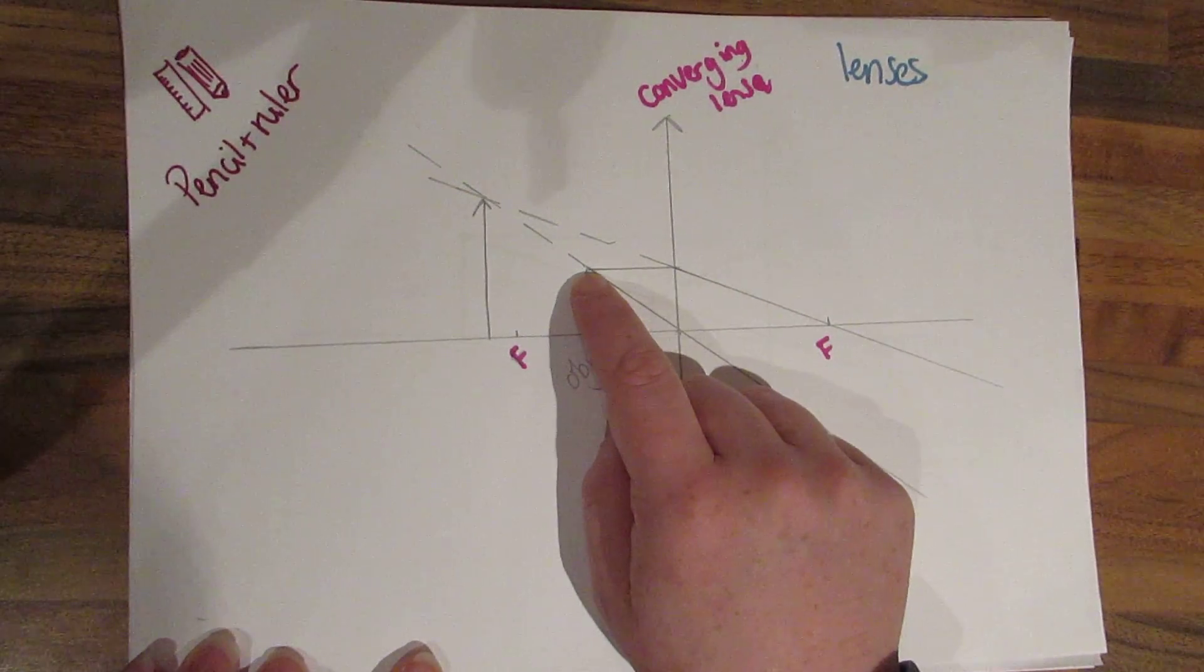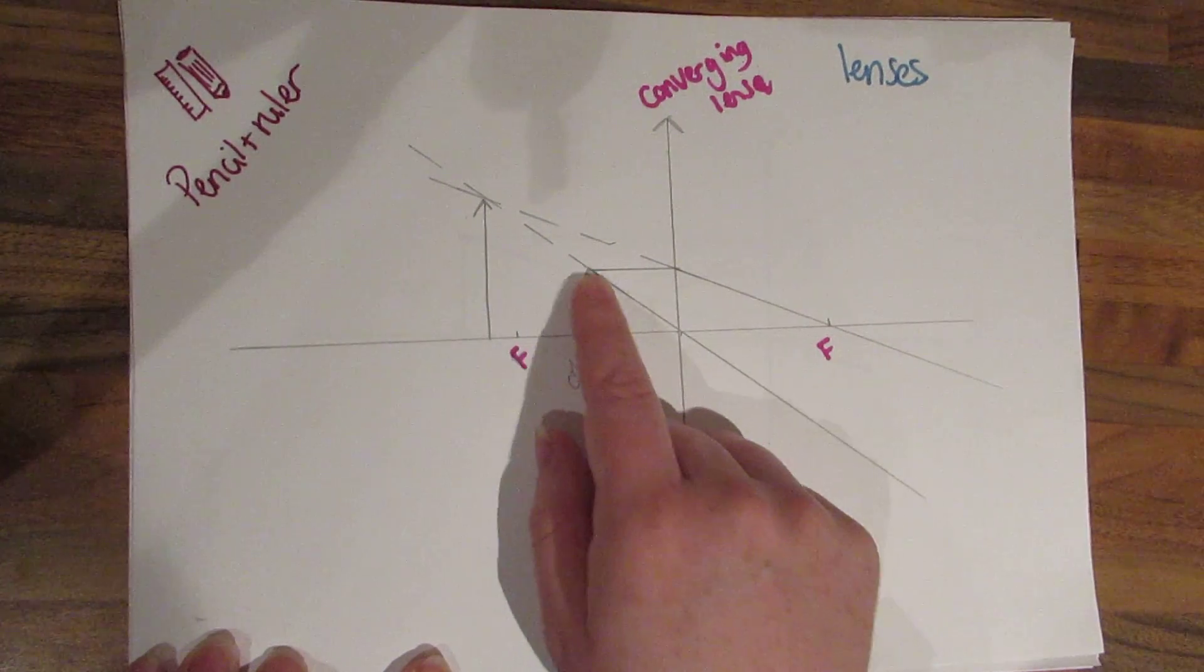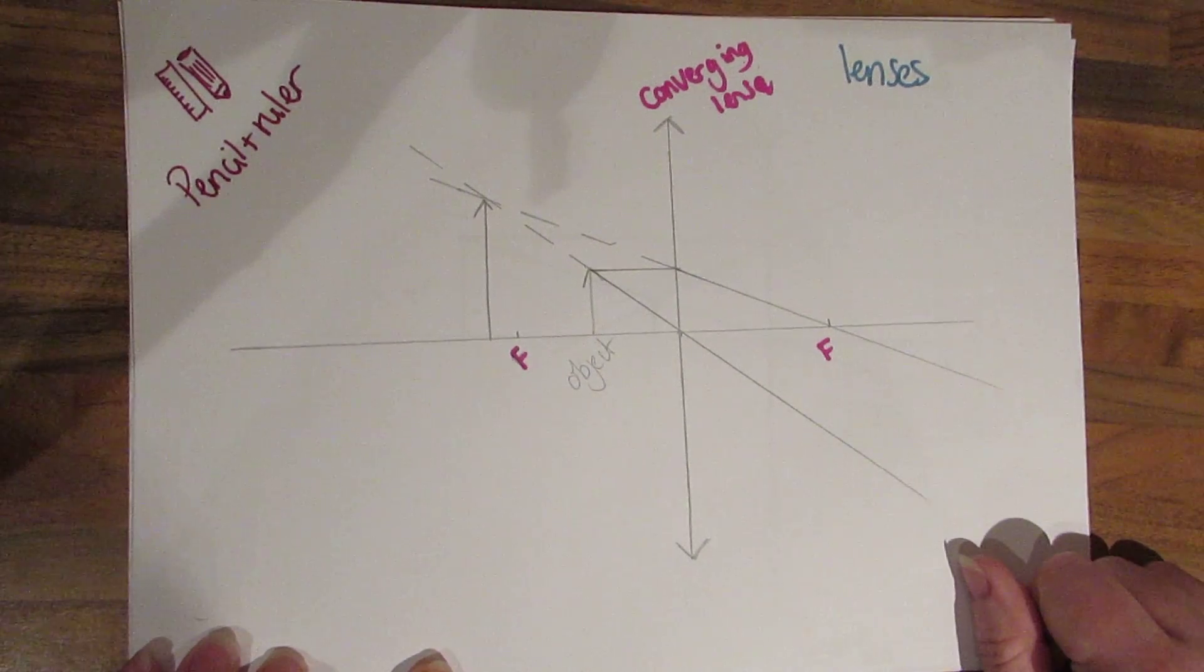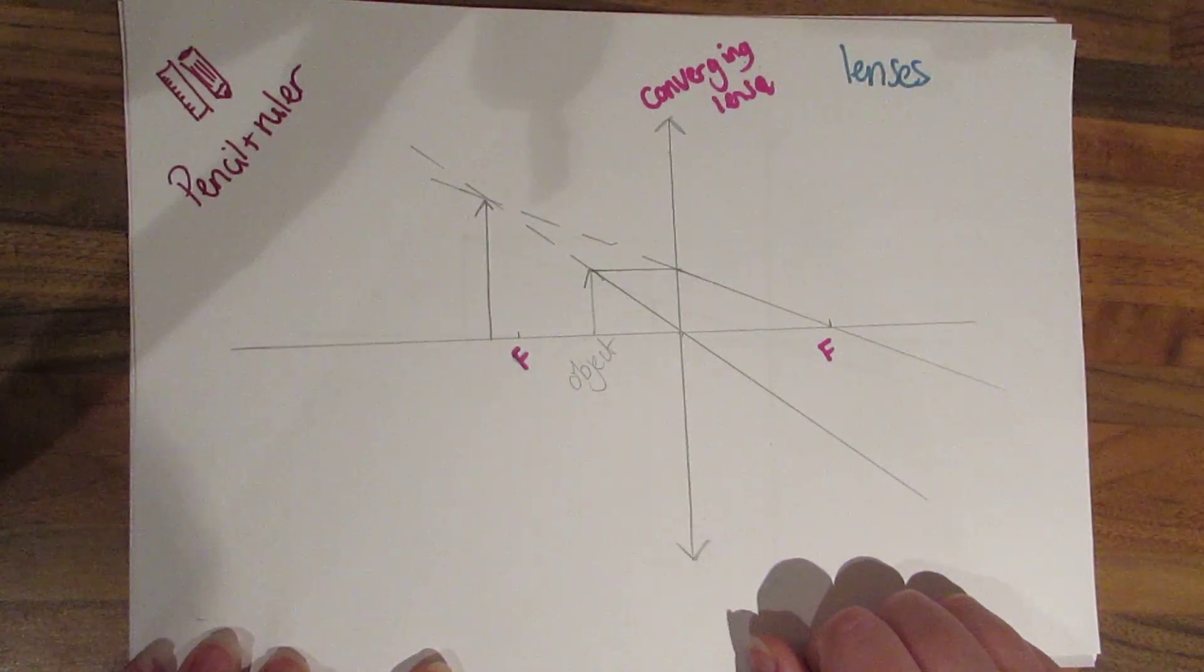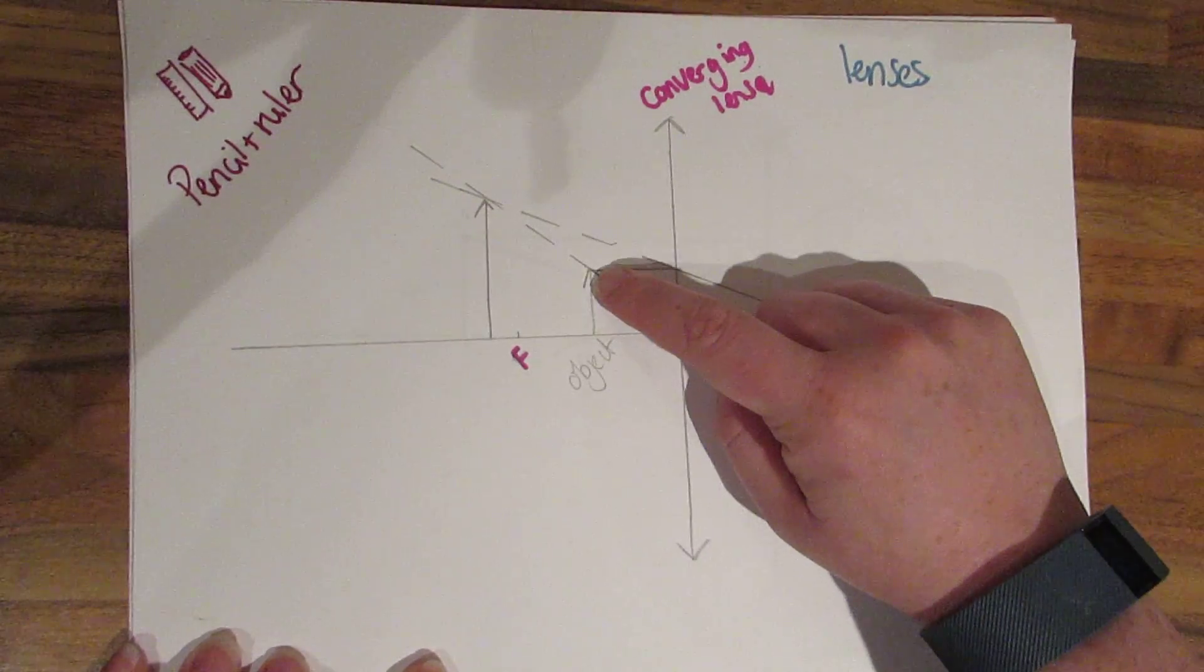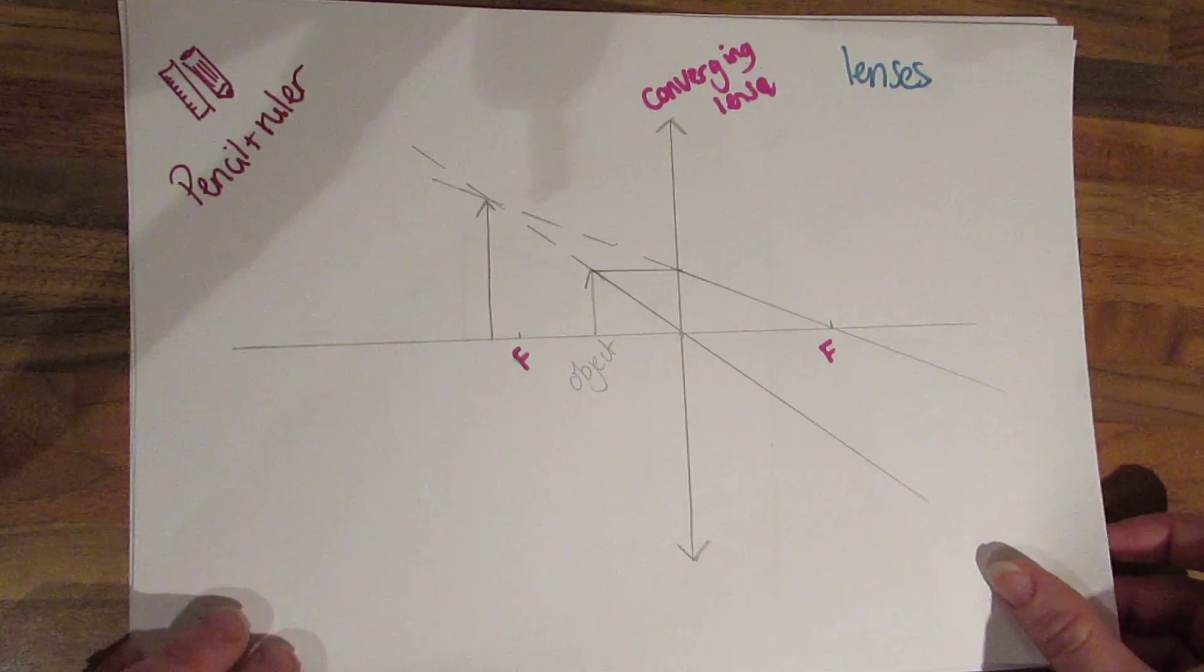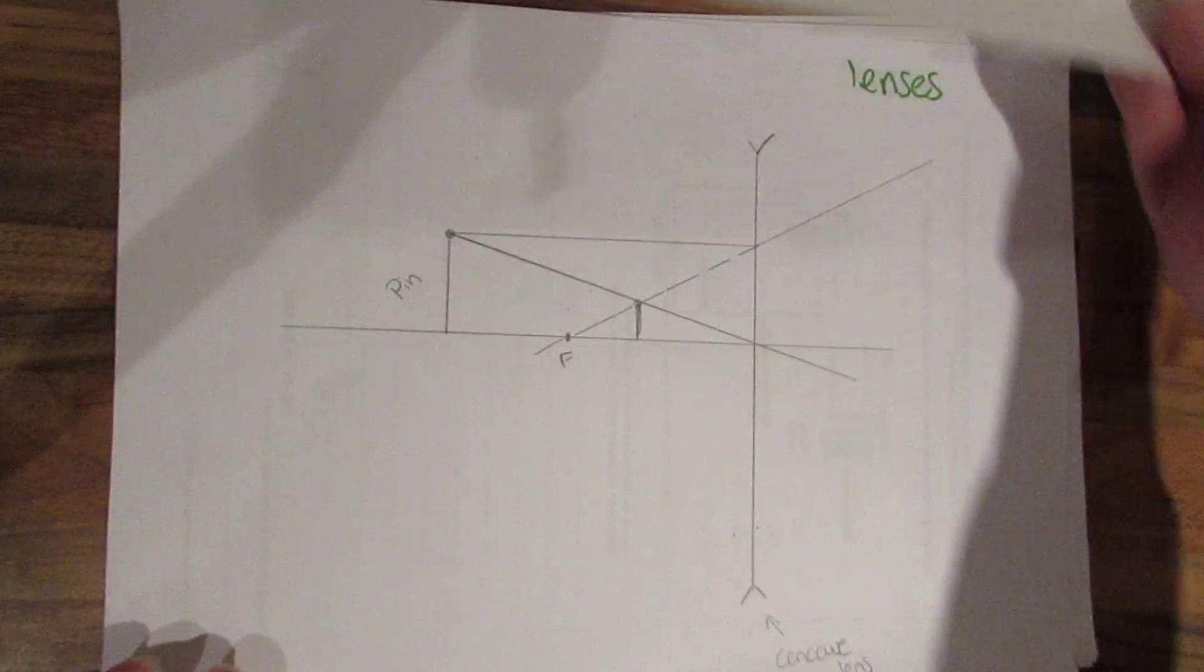You draw a line from the top to the lens through the focus point and down, from the top through the middle of the lens and down. Now these two lines are never going to meet up so you need to track them backwards and this is traditionally done with a dashed line and then where the lines meet this is the object. Now this image is the right way up, it is larger and it is a virtual image because it's on this side of the lens.